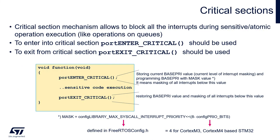The critical section mechanism allows us to block all interrupts during a sensitive or atomic operation execution within the operating system. The blocking of interrupts is valid only for interrupts which use operating system functions — up to the level specified by the configuration macro configMAX_SYSCALL_INTERRUPT_PRIORITY. All interrupts with higher priority than this would not be blocked, so hardware critical to the application remains fully operational. The blocking applies only to the operating system and its components, and all interrupts cooperating with operating system functions.